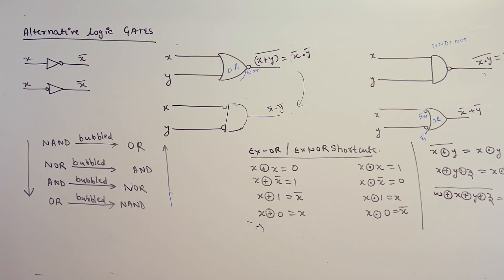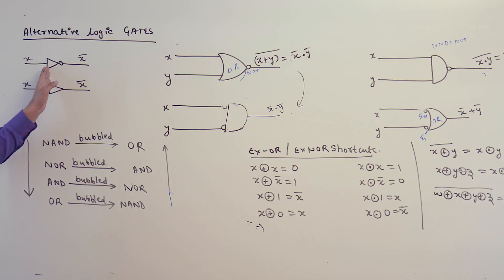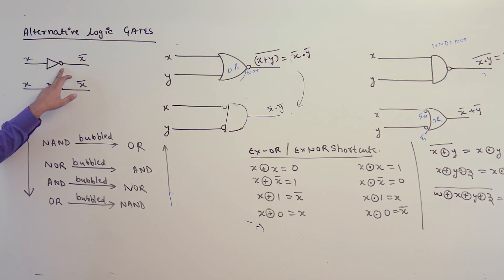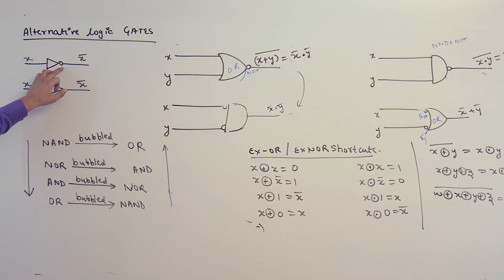Consider these gates. The first one is the NOT gate. We are going to use a buffer gate and a NOT gate — the NOT symbol — with a buffer gate, and this is representing a NOT gate.